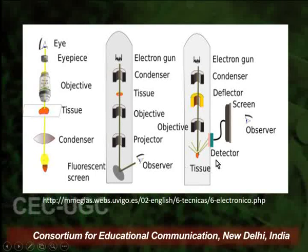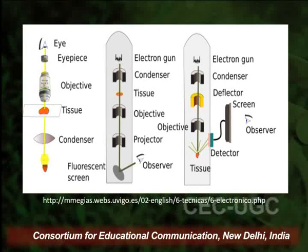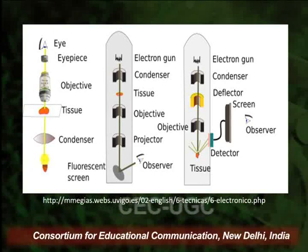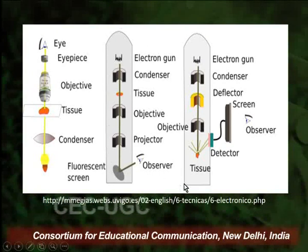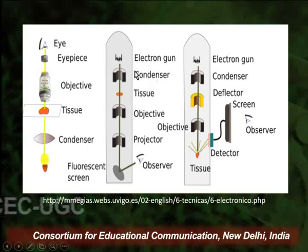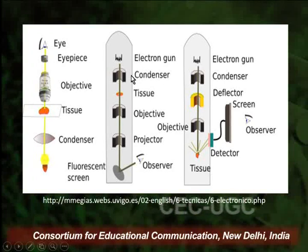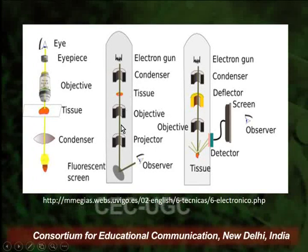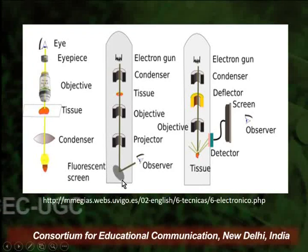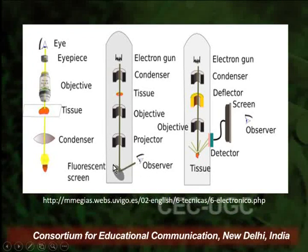Since electron microscopes use electron beams which cannot be generated easily, and since the wavelength is very low, they can be very harmful if we get exposed. So they are placed in a very specialized chamber. An electron gun generates the beams. The condensers are specialized and made up of metallic coils. In a transmission electron microscope, the beam passes through the tissue, and the objective and projector lenses are also specialized. The image is observed on a fluorescent screen, so our eye never gets exposed to the electron beam directly.